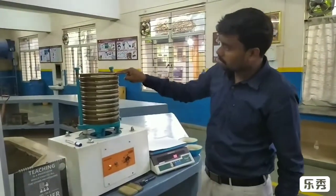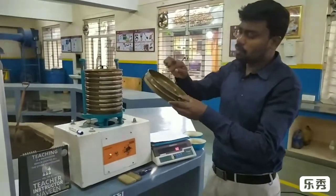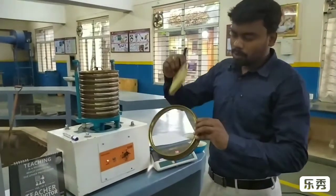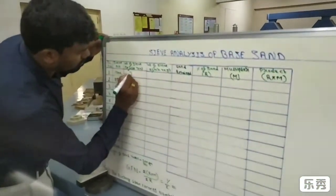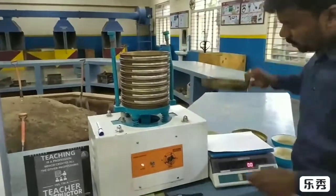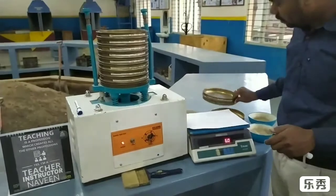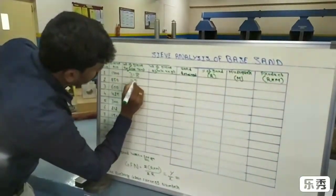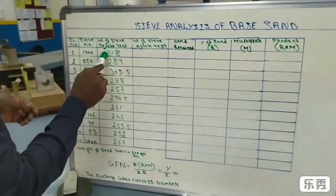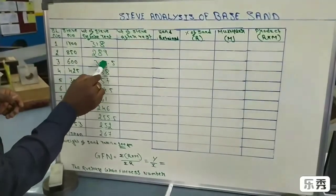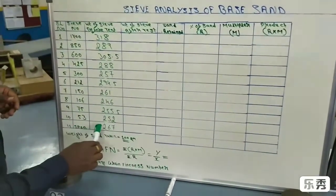We want to take the weight of the sieve before test. First, clean each sieve using normal cleaning pressure. Once the sieve is cleaned, take the weight of each sieve individually. The first sieve is 318 grams, the second is 289 grams, the third is 305.5 grams. The same way, the pan weight is 267 grams.